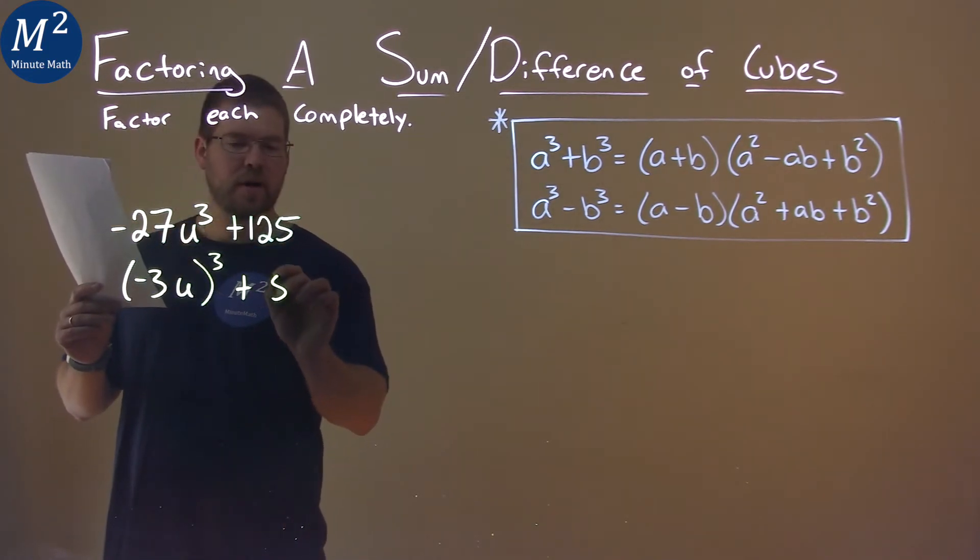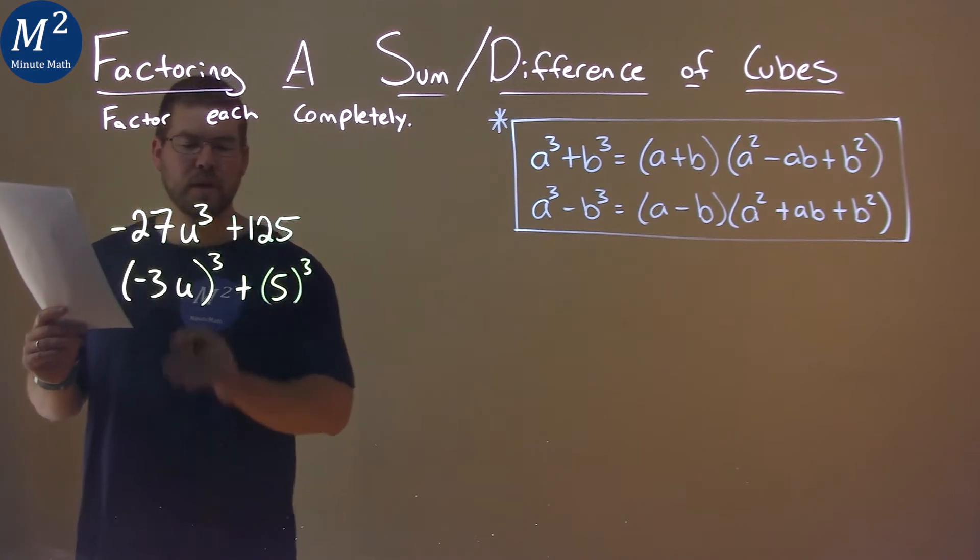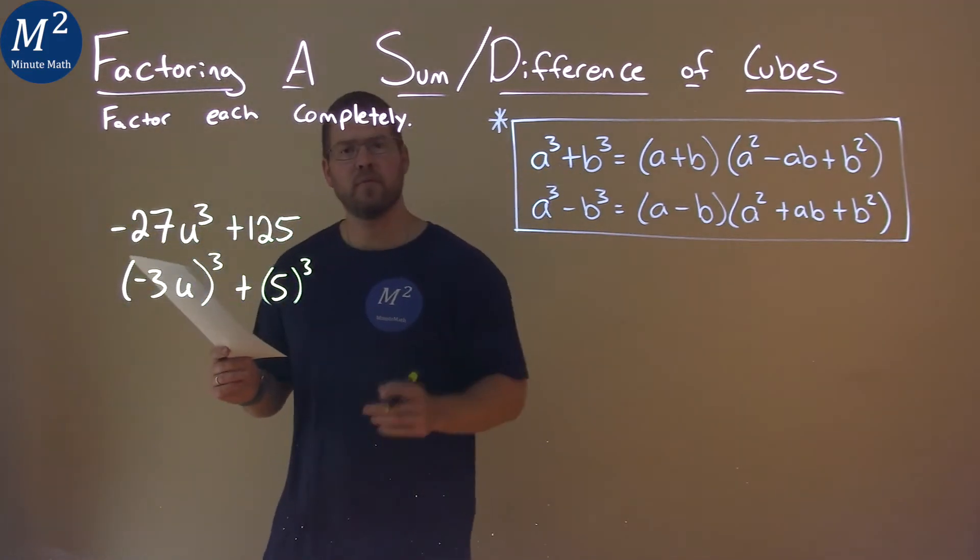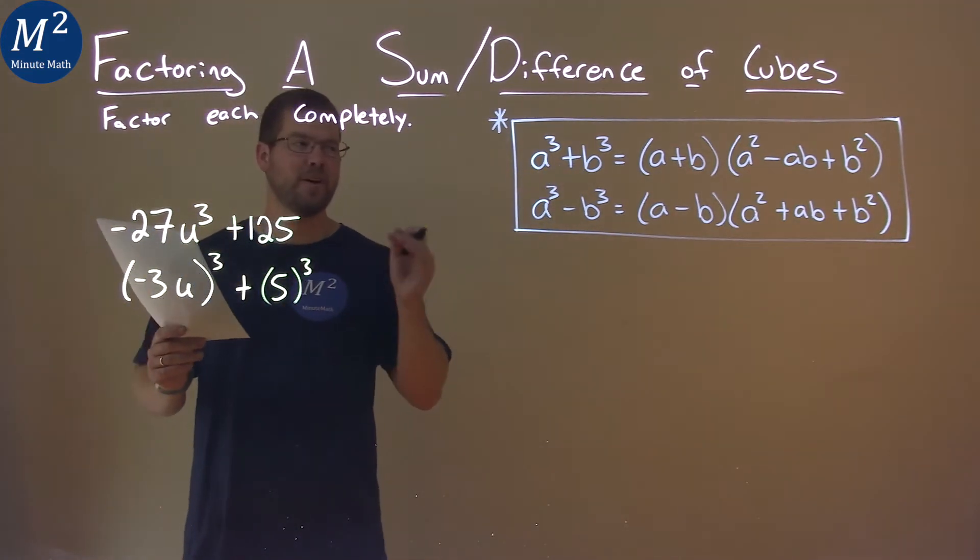125 is the same thing as 5 cubed, and hopefully now you can see it's the same form as our sum of cubes formula.